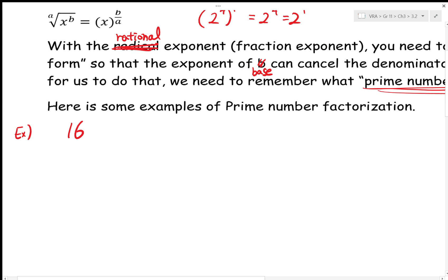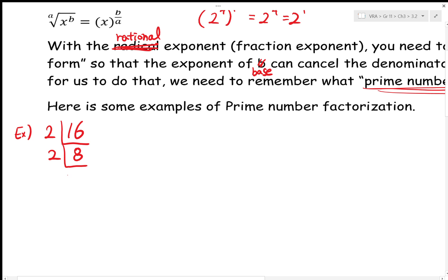We're taking the prime number factorization of 16. The first thing is you have to choose the smallest possible prime number that divides 16. We put the upside-down long division sign, and in this case 2 divides 16. We just keep doing the same thing until we get to 1: 16 → 8 → 4 → 2 → 1. Therefore 16 can be represented as 2 to the power of 4.